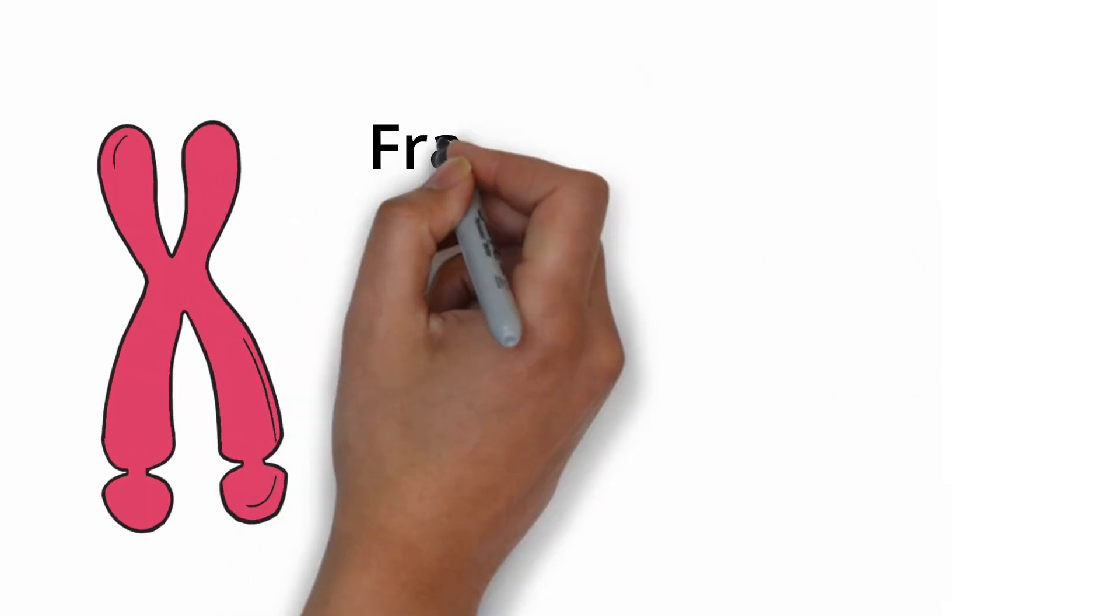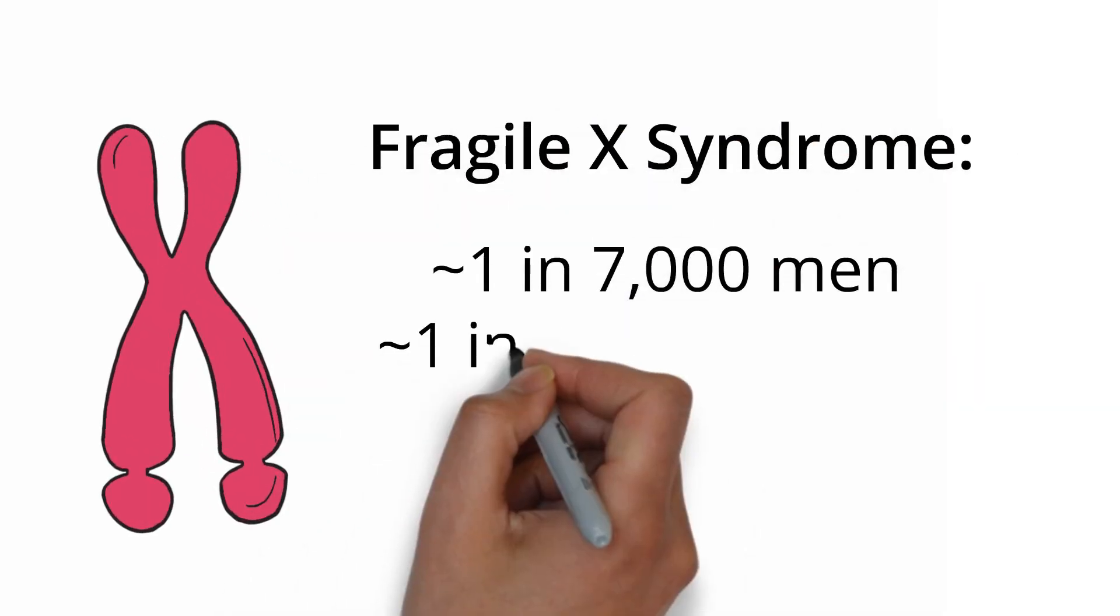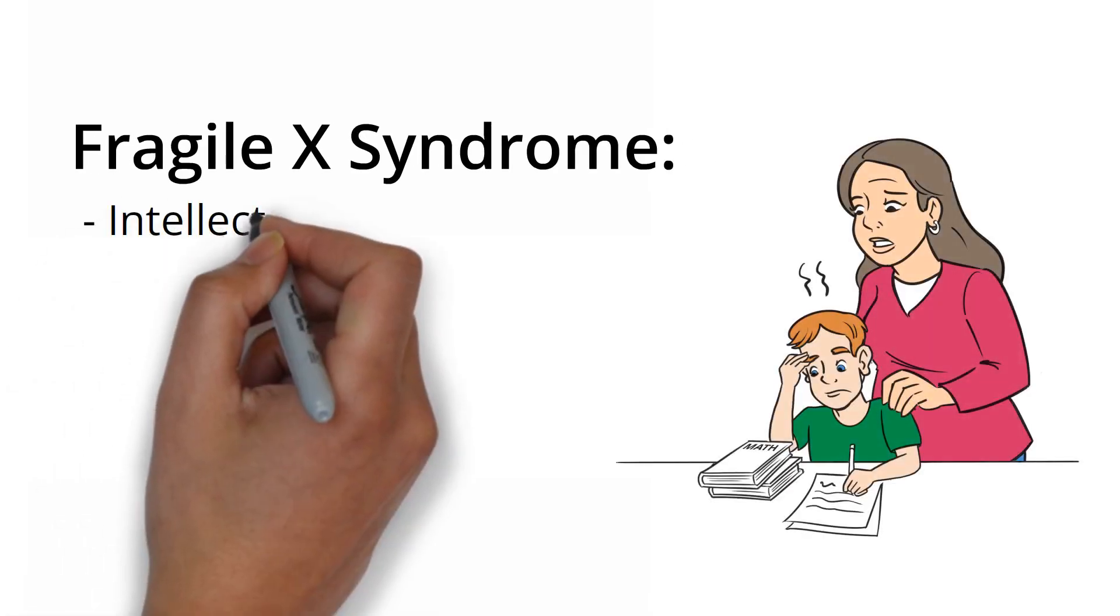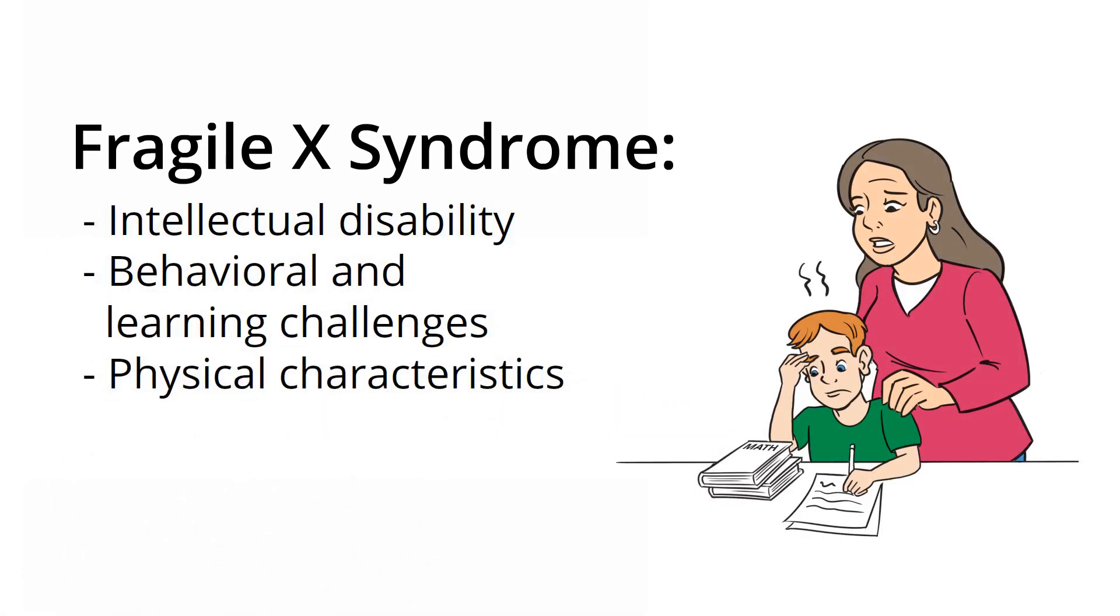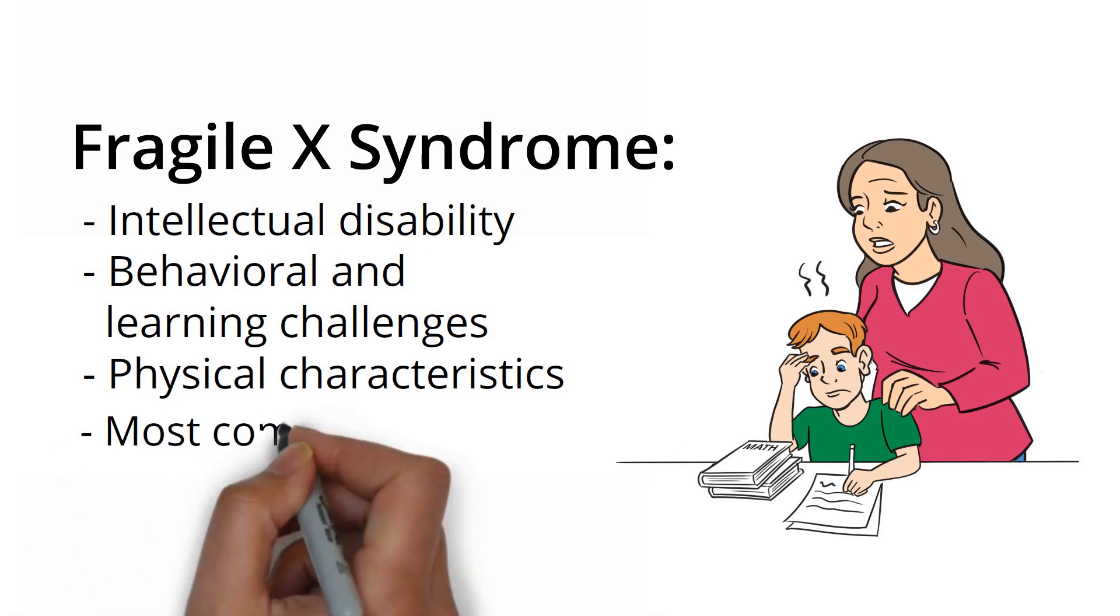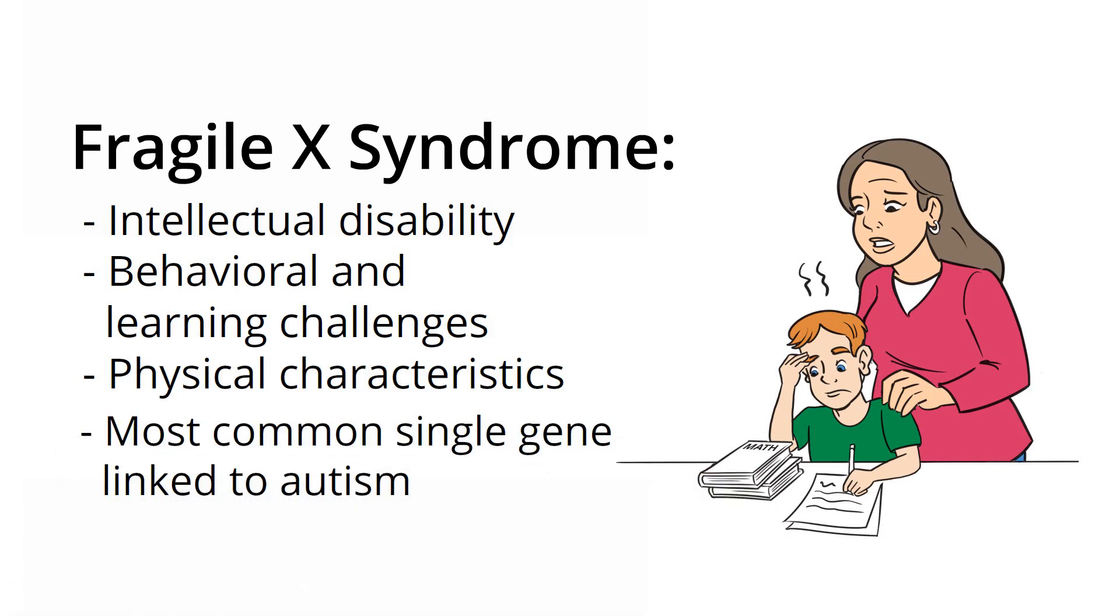A full mutation can result in Fragile X syndrome, which is a rare disease. Fragile X causes intellectual disability, behavioral and learning challenges, and various physical characteristics. Fragile X is also the most common single gene linked to autism.